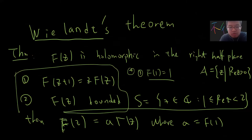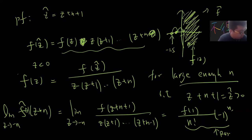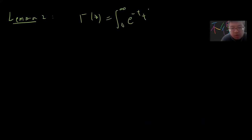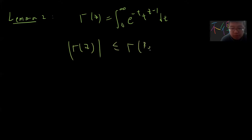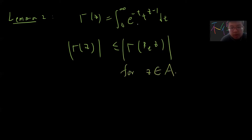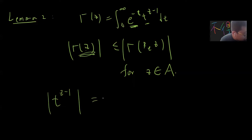Now let's go to the proof of the main theorem. There's also a second lemma: by the integral definition, Γ(z) divided appropriately, one can show that |Γ(z)| ≤ Γ(Re(z)) for z in the right half plane. This follows because when you take the absolute value of t^(z−1), it becomes t^(Re(z)−1).